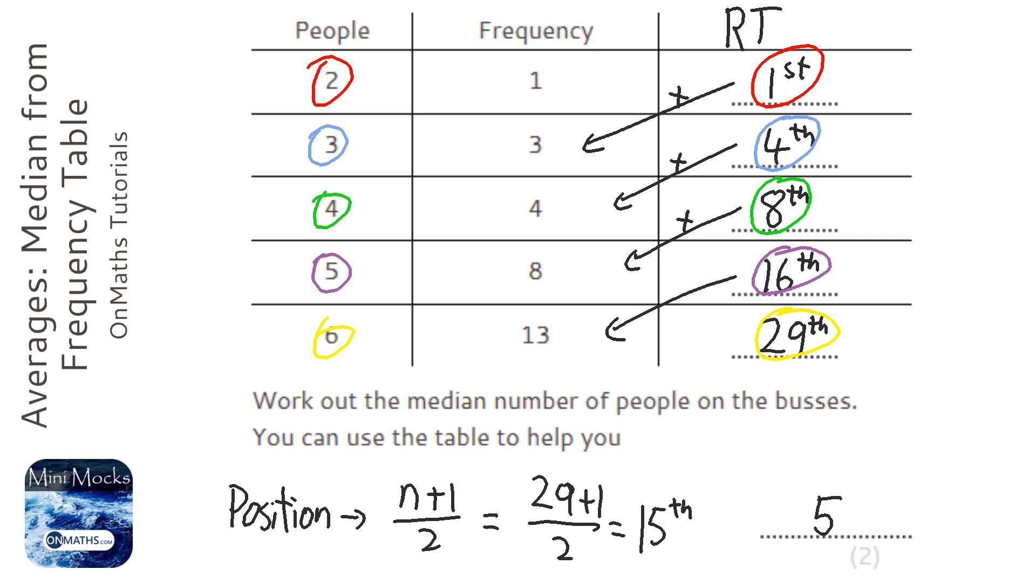A few other ways you can do this is you can write out the numbers in one long list. That's easy for this question because there's only 29 values—I say it's easy, that would take you a while. But if in the exam there's 100 values, that's slightly harder to do.